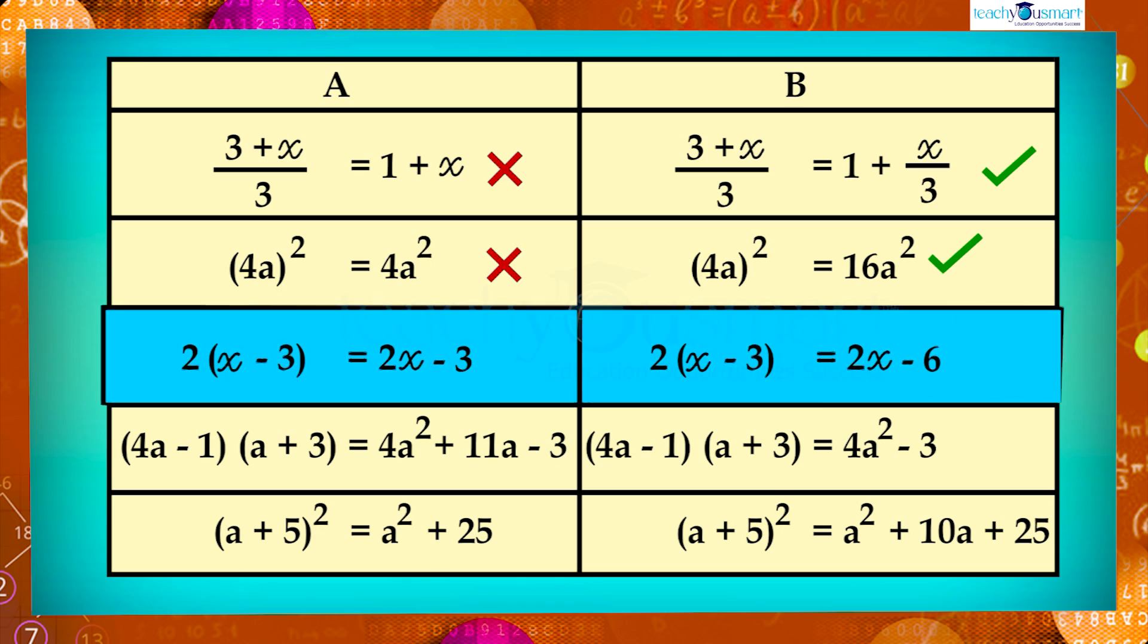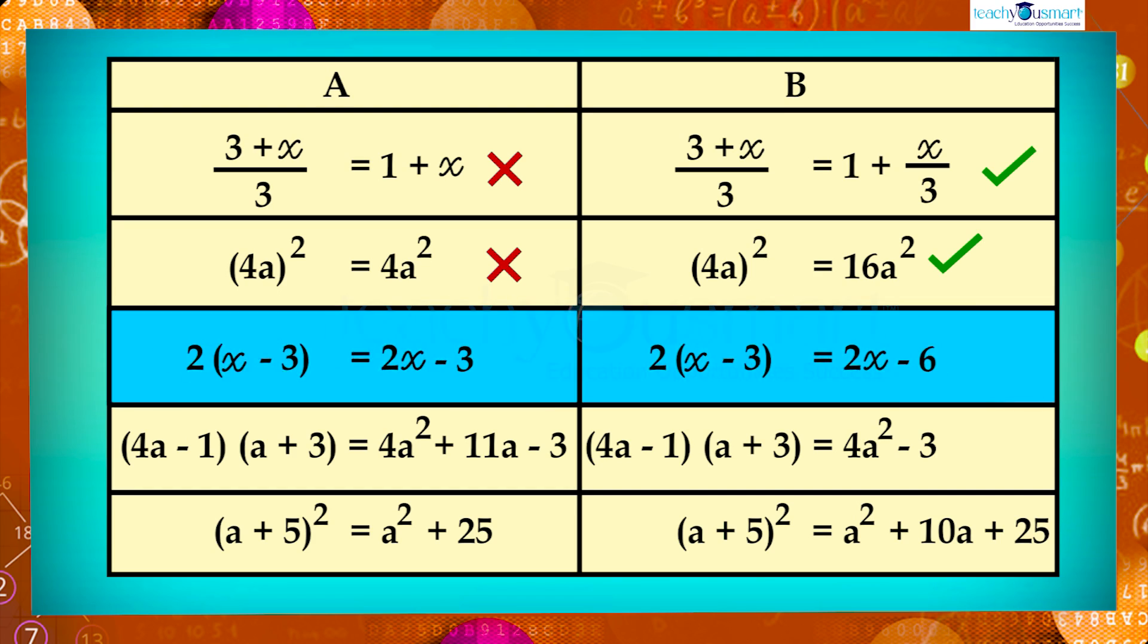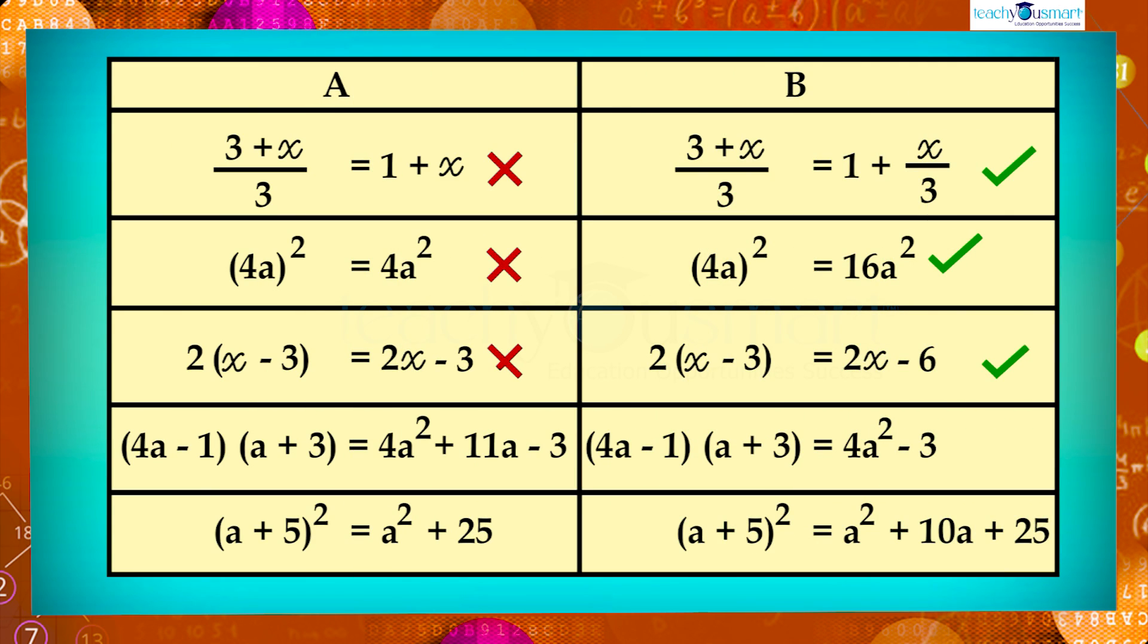Next, in 2 multiplied by x minus 3, there is an expression enclosed in a bracket and a constant outside. Then by using distributive property we can write 2 multiplied by x minus 3 equals 2 multiplied by x minus 2 multiplied by 3, equals 2x minus 6. That is B is correct.